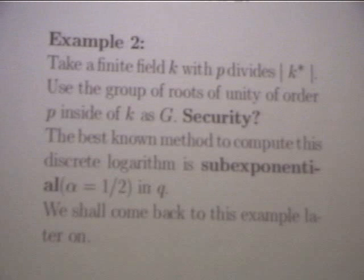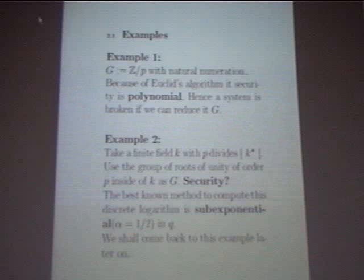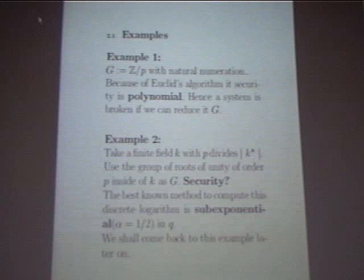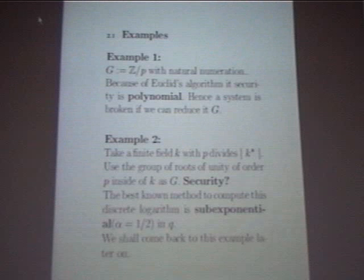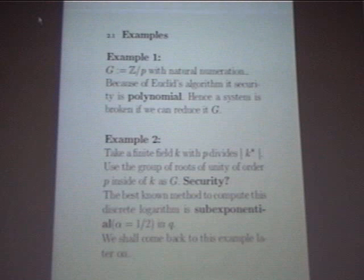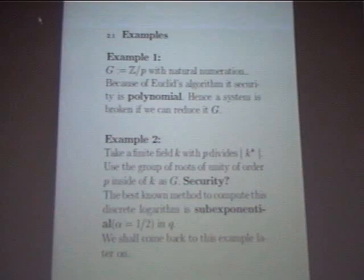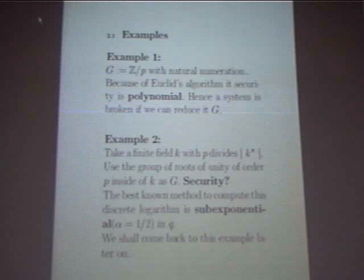The discrete logarithm in finite fields is really sub-exponential, with α equal to one-half and sometimes even α = one-third. So it is weaker, but if you go to large enough Q — the number of elements in your finite field — you have a secure system, at least nowadays. But the bad thing with sub-exponential security is that if you want to double the security, it is not enough to take one bit more; you nearly have to double the bit size. Sub-exponential systems are okay, but not the best.